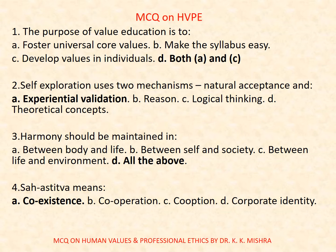Self-exploration uses two mechanisms: natural acceptance and — options are: a) experiential validation, b) reason, c) logical thinking, d) theoretical concepts. Correct option is A, experiential validation. Question 3: Harmony should be maintained in — options: a) between body and life, b) between self and society, c) between life and environment, d) all of the above. Correct option is D, all of the above. Question 4: Sahastitwa means — options: a) co-existence, b) co-operation, c) co-option, d) corporate identity. Correct option is A, co-existence.